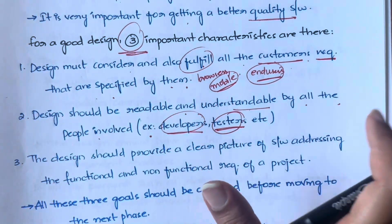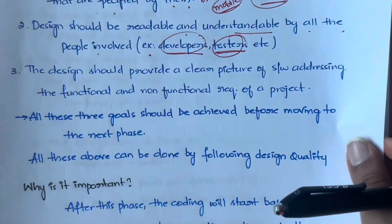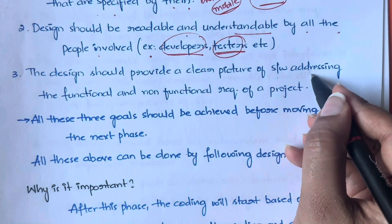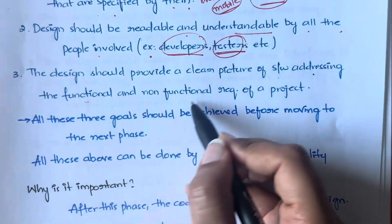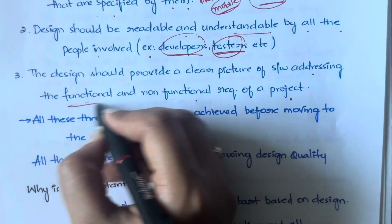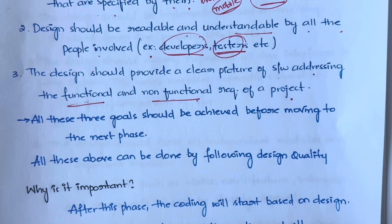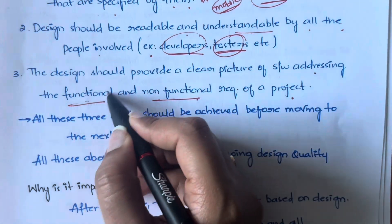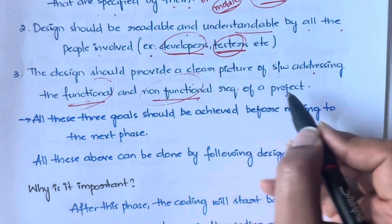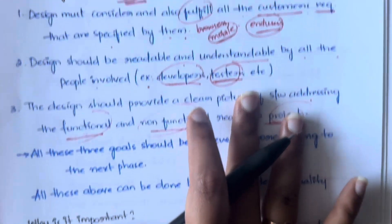Next, the design should also provide a very clear picture of the software, addressing both functional and non-functional requirements of a project. That design should give you a clear understanding of both functional and non-functional requirements involved in the project. That covers the three characteristics.